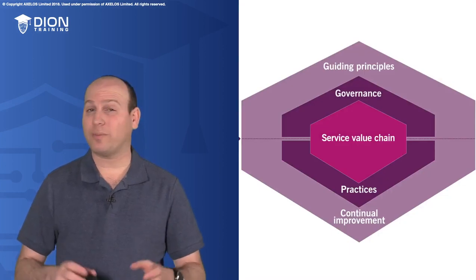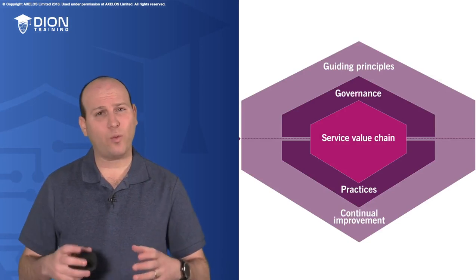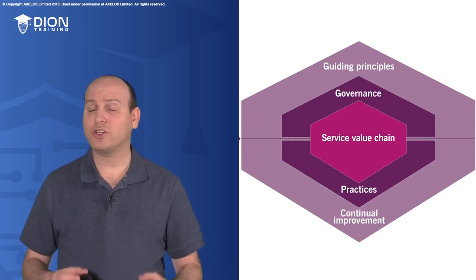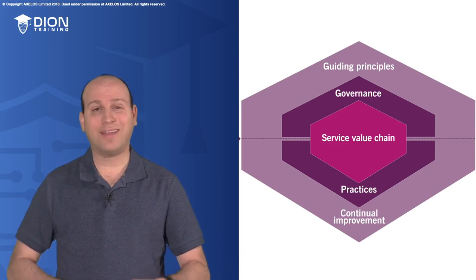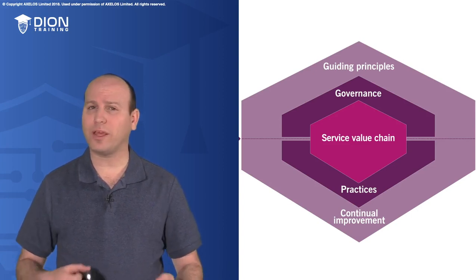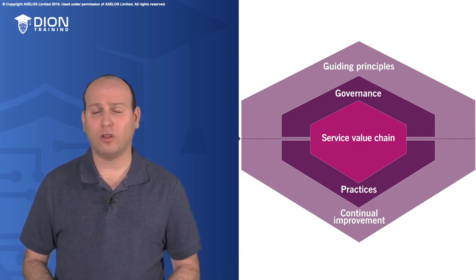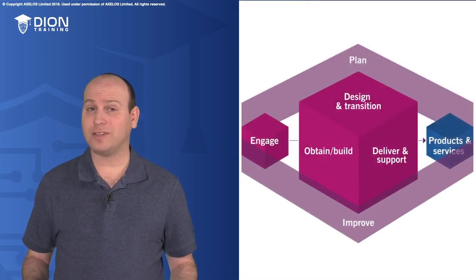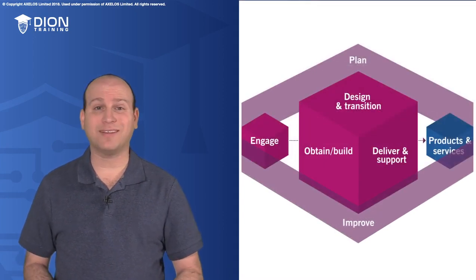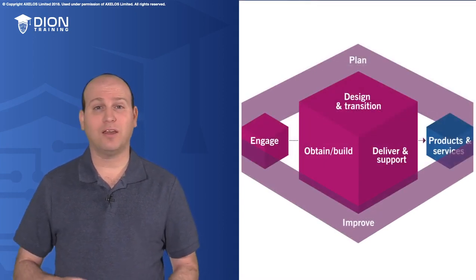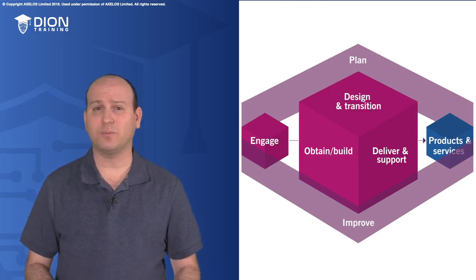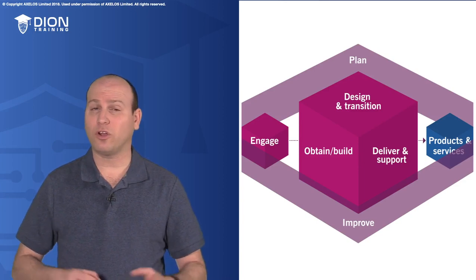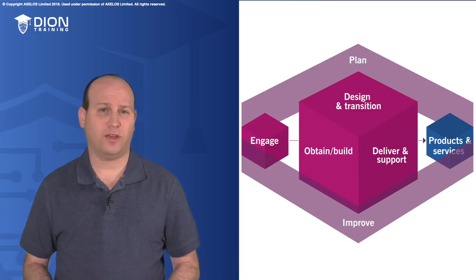Back when we talked about the service value system, we had one inside block that showed us the service value chain. In this section of the course, we're gonna break that block open and look at all of those different pieces. As you can see here, we have things like engage, plan, improve, design and transition, obtain and build, deliver and support, and products and services — and all of those are gonna work together as part of this service value chain.